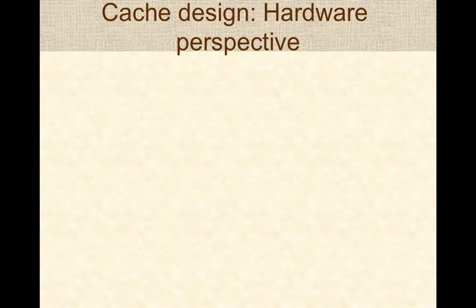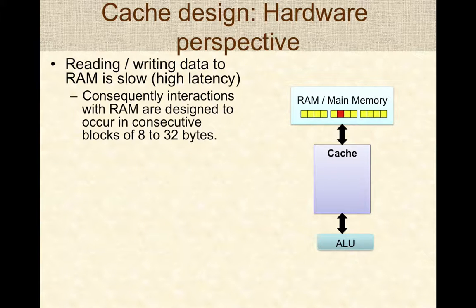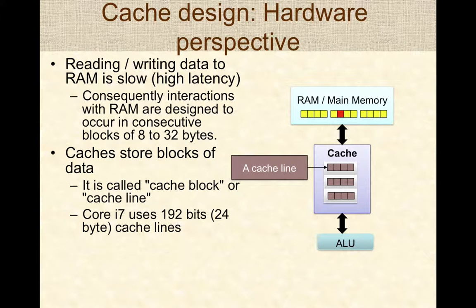From a hardware perspective, reading or writing data to RAM is slow — there is high latency. So interactions with RAM are designed to occur in consecutive blocks, typically of 8 to 32 bytes. Caches correspondingly store blocks of data; this is called a cache block or a cache line. For example, the i7 uses 192-bit cache lines.